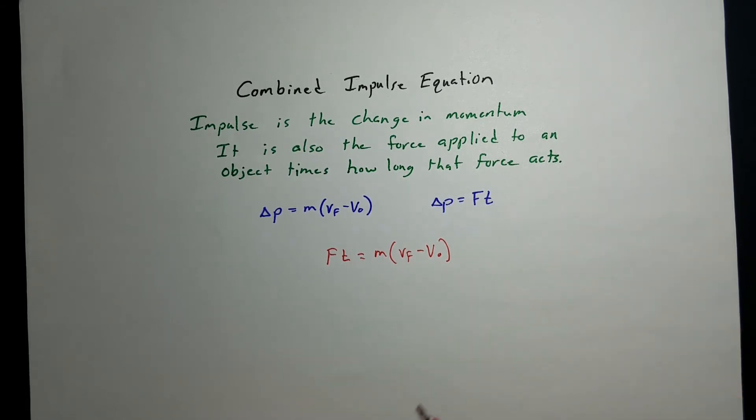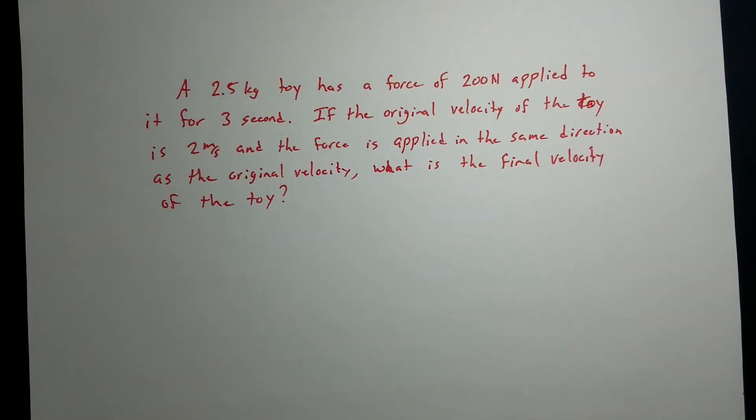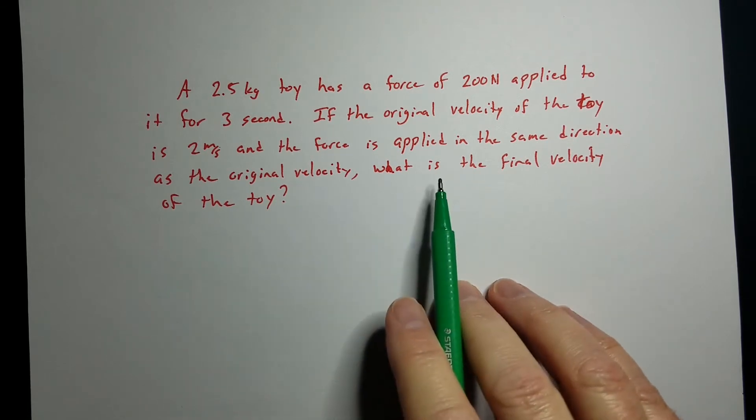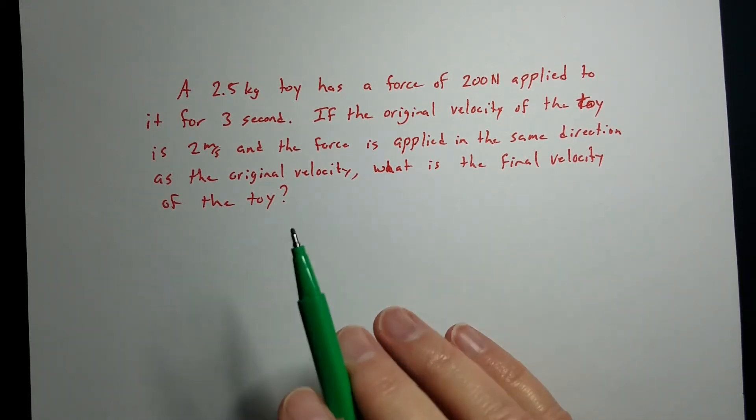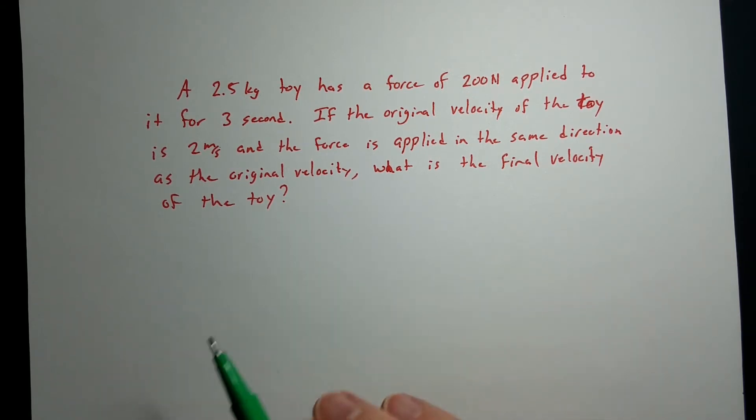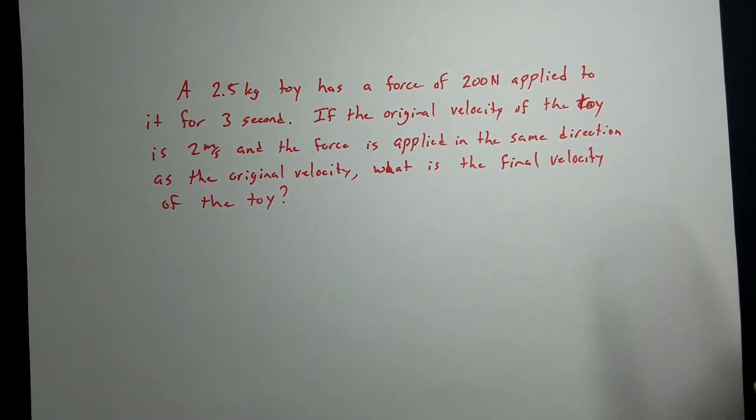So let's just take a look at a couple. We've got a 2.5 kilogram toy with a force of 200 newtons applied to it for 3 seconds. The original velocity is 2 meters per second, and that force is being applied in the same direction as the original velocity. And we want to know the final velocity.